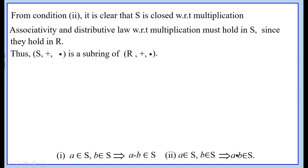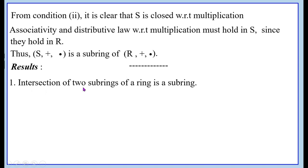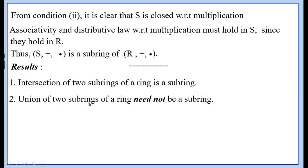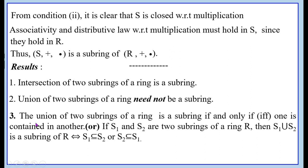Results. The intersection of two sub-rings of a ring is a sub-ring. The union of two sub-rings of a ring need not be a sub-ring. The union of two sub-rings S1 and S2 of a ring R is a sub-ring if and only if one is contained in the other — that is, S1 is contained in S2, or S2 is contained in S1.